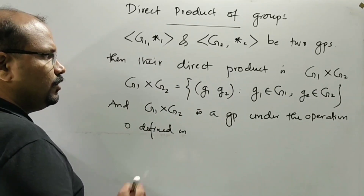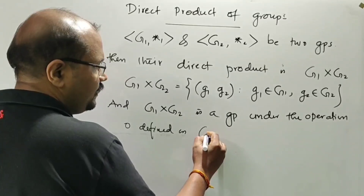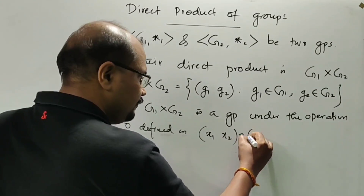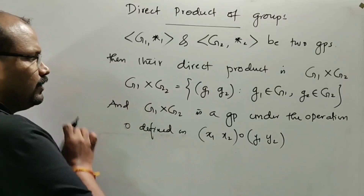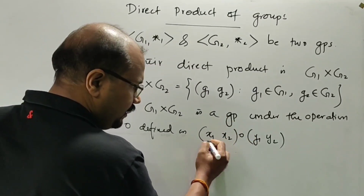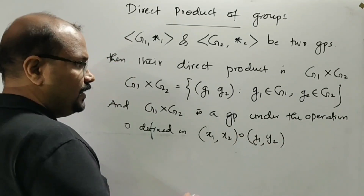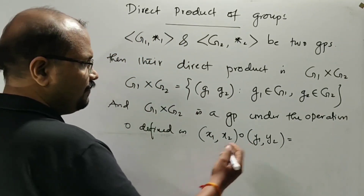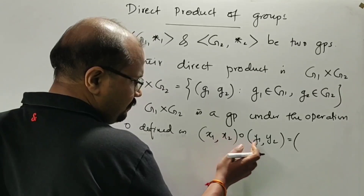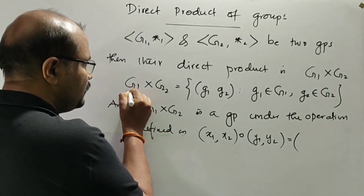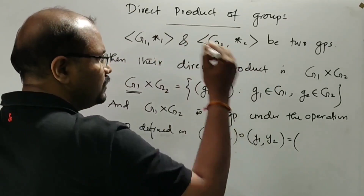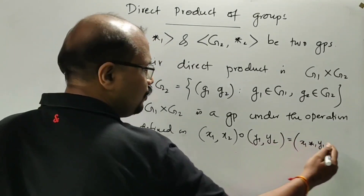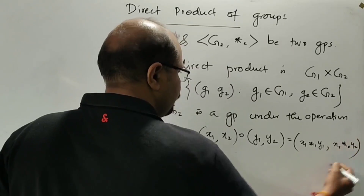So this is a Cartesian product, and G1 cross G2 is a group under the operation defined component-wise. If we choose two elements like (x1, x2) as one element in G1 cross G2 and (y1, y2) as another element in G1 cross G2, then the dot operation is defined as: (x1, x2) dot (y1, y2) equals (x1 star1 y1, x2 star2 y2).